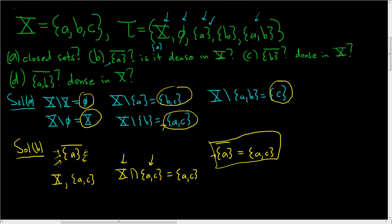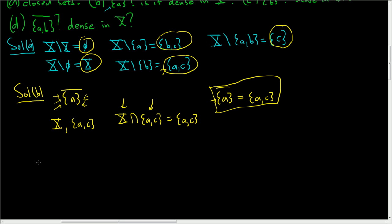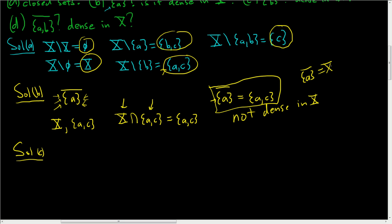Let's do part C — we want the closure of the singleton set containing B. This singleton {A} is not dense in X, because if it were dense, you would have that the closure is equal to X. That's what it means for something to be dense in X.